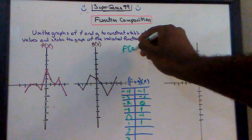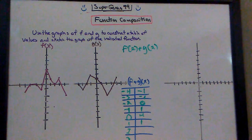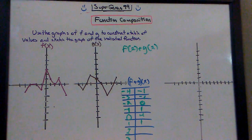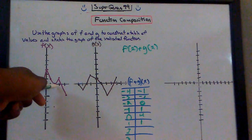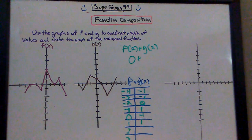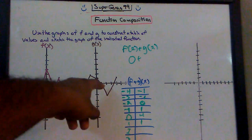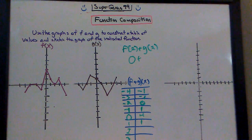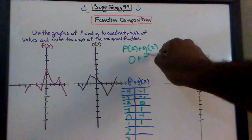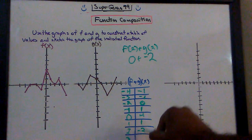f of 2 plus g of 2. What is the corresponding y value when x is 2 in the f function? x is 2, y is 0. What is the corresponding y value when x is 2 on the g function? When x is 2, y is negative 2 on the g function. So what is 0 plus negative 2? Negative 2.